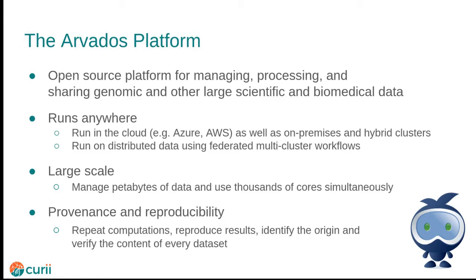Another high-level goal is to work at the scale of modern biomedical research. Instruments such as sequencers and microscopes can produce hundreds of gigabytes of data in a single run, and produce hundreds of terabytes of data annually, so Arvados needs to work at petabyte scale and manage thousands of cores to process all that data. Finally, we want a complete record of everything done on the system so we can determine what was done, confirm or reproduce results, track the origin of data, and be able to verify that a dataset has not been modified, with a history of changes when it has been modified.